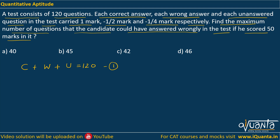We were told that each correct answer, each wrong answer, and each unanswered question carried one mark, minus half mark, and minus 1/4 mark respectively, and the candidate scored 50 marks. So: 1×C + (−1/2)×W + (−1/4)×U = 50. If we simplify by taking the LCM and cross-multiplying, we get 4C − 2W − U = 200. This is equation number 2.